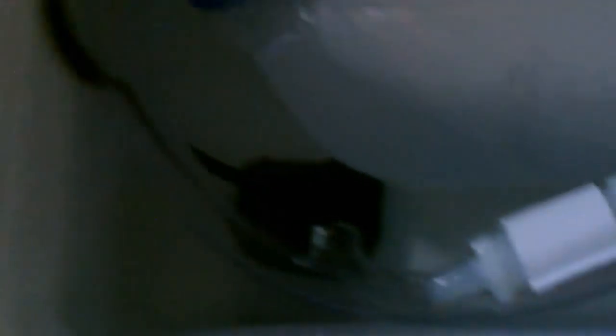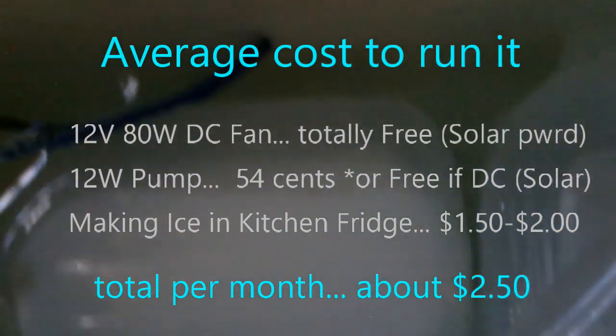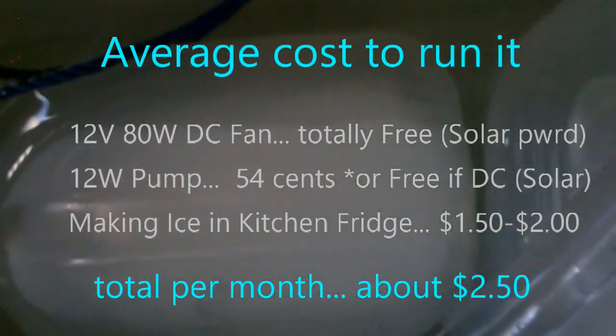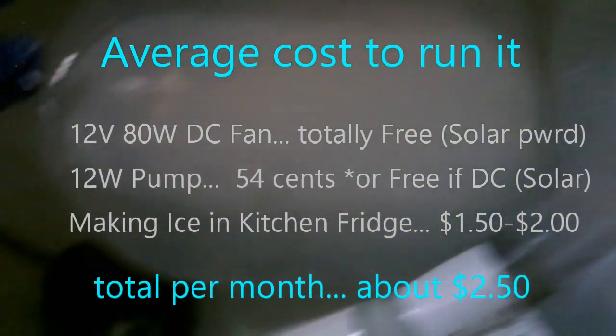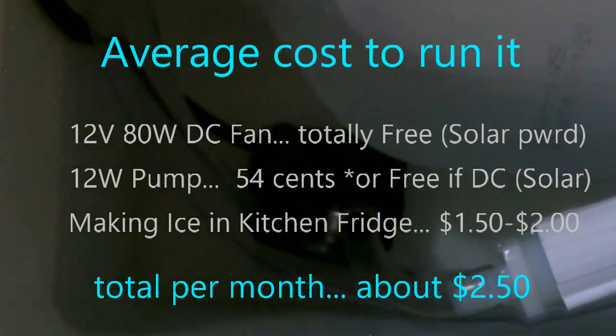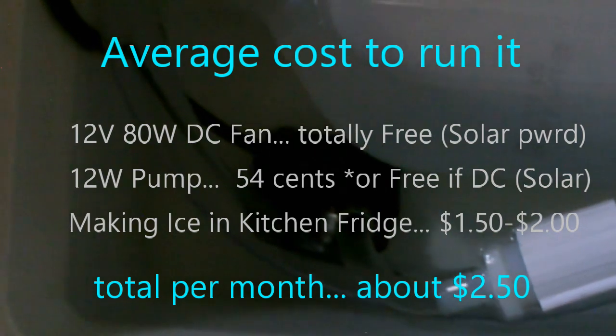So $1.50 to $2 for the ice on the cost, 54 cents for the pump, and it's an 80 watt fan but I'm doing DC solar so that doesn't even apply. And you could do the solar on the pump too, matter of fact you can do the ice on the solar too if you want, I got some earlier videos on that. But assuming you're going to use your fridge, $1.50 to $2 for all the ice you need for the month, $0.54 for the pump figuring on the high end at 15 cents a kilowatt hour and an average of running it 10 hours a day, and the fan it's free solar.